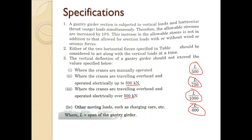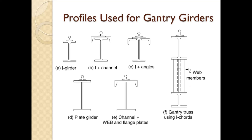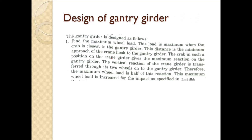These are some profiles used when designing the gantry girder: only an I-section with rail on top; I-section plus channel; I-section plus angle; a gantry truss using I-codes with web members; a plate girder made using plates; and a section made using channel and plates. These are the profiles used for designing the gantry girder.